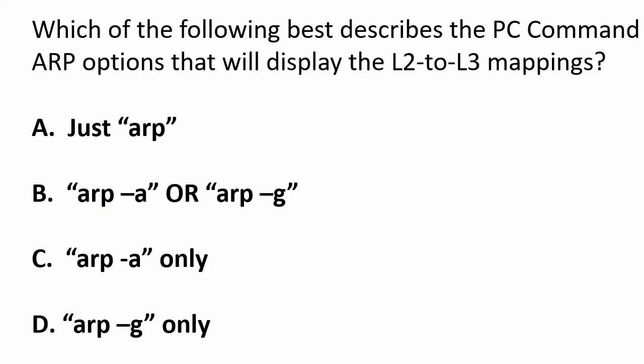So with no further ado, let's get to today's question: which of the following best describes the PC command ARP options that will display the L2 to L3 mappings? This is good stuff to know for Network+ and for the CCNA exam, which is why we're starting off with this particular question. Can you run just ARP, ARP-A, ARP-G, ARP-A only, or ARP-G only?